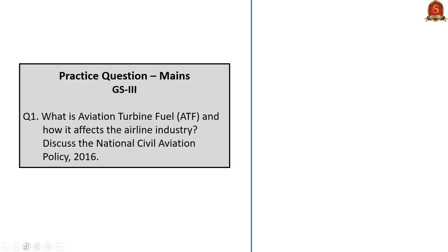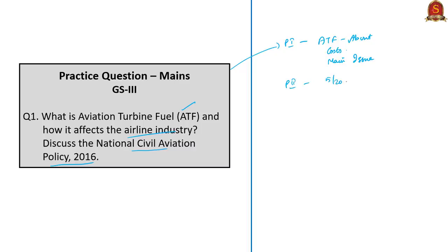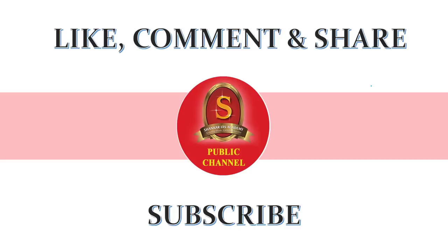The practice mains question asks: What is Aviation Turbine Fuel (ATF) and how does it affect the airline industry? Discuss the National Civil Aviation Policy of 2016. For the first part, mention that ATF is fuel powering aircraft and accounts for about half of total airline costs — a long-standing issue in the airline industry. For the second part, highlight points like scrapping of the 5/20 rule and the Regional Connectivity Scheme. With this, we come to the end of today's session. Please like, comment, and share the video, and subscribe to Shankar IAS Academy's YouTube channel. Stay focused and motivated. Thank you.